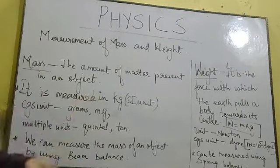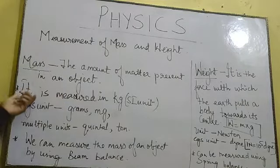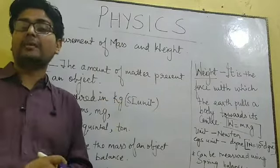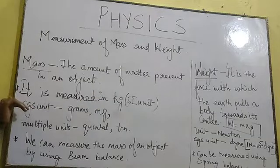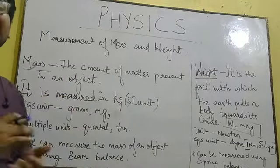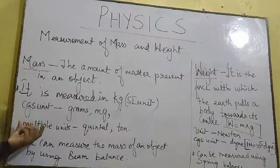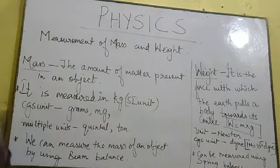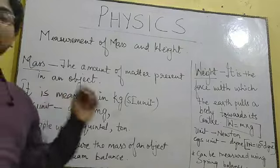The amount of matter present in an object is known as its mass. We can measure mass in kilograms — that is the standard SI unit of mass. The smaller CGS unit of mass is grams and milligrams, whereas the bigger units of mass are quintals and tons.